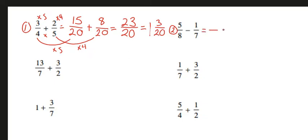The least common denominator here is going to come when we multiply 8 and 7, which will be 56. To get from 8 to 56, we need to do times 7. And what we do to the bottom, we also do to the top. 5 times 7 is 35.